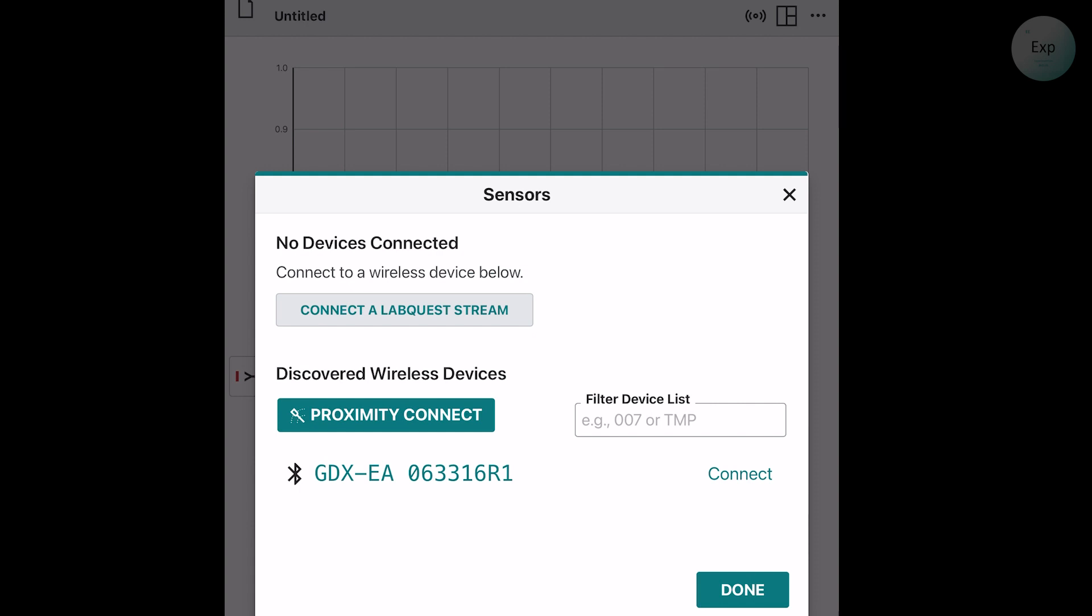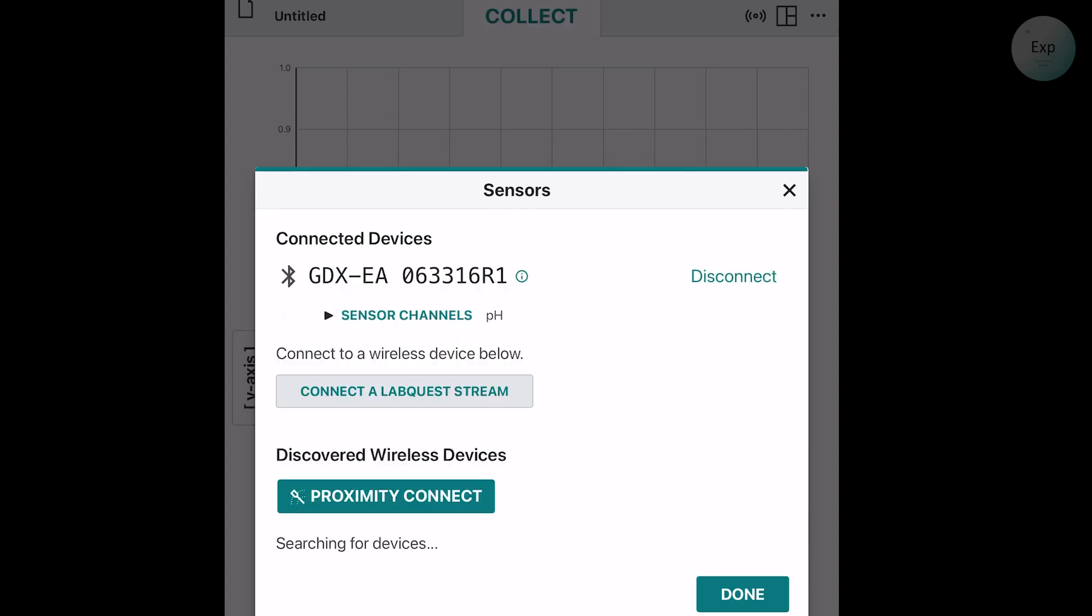When I click on that, it will allow me to locate any wireless devices that are in the area. It's located my pH probe. I'm going to identify that and complete the connection. Now that it shows up under connected devices, I will click done.